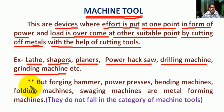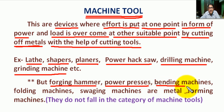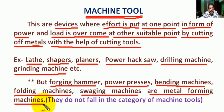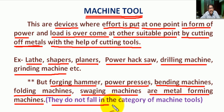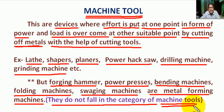However, machines like forging hammers, power presses, bending machines, folding machines, swaging machines — these are metal forming machines. They are used for metal forming and they do not remove material. So they do not fall in the category of machine tools, because they are only used for forming the job.